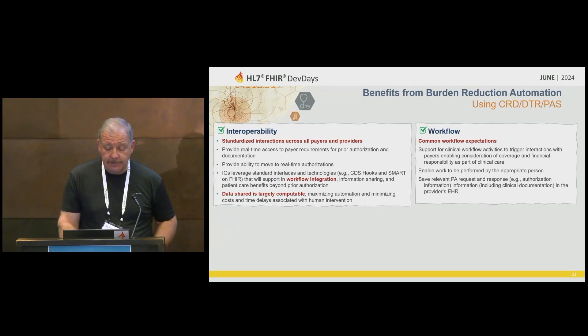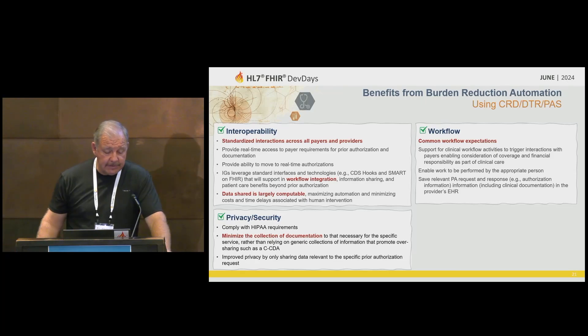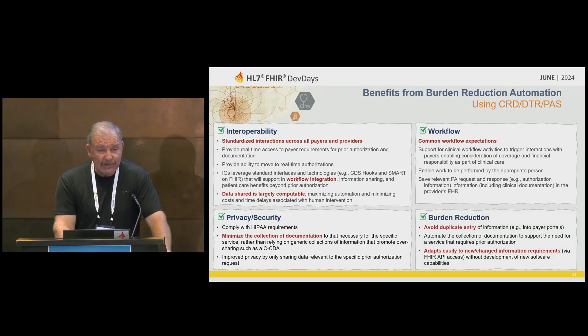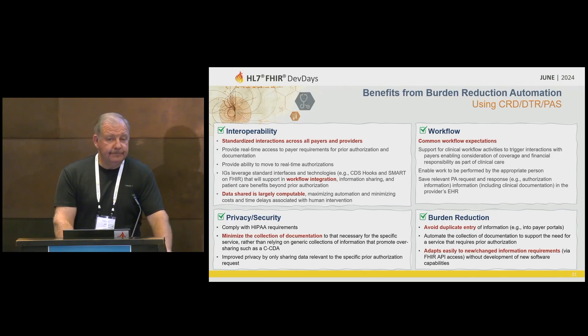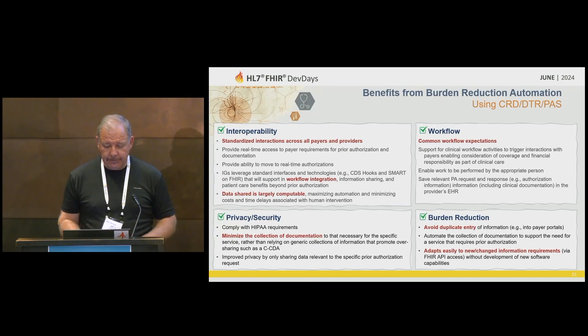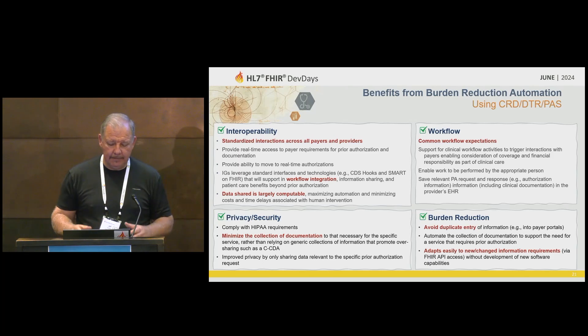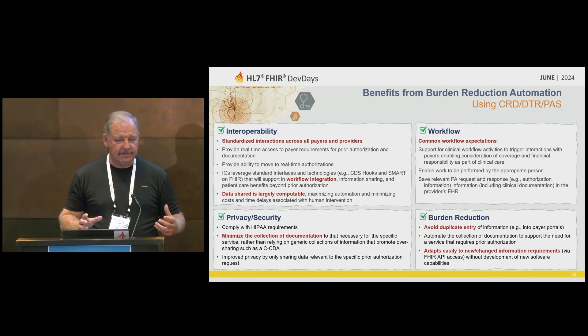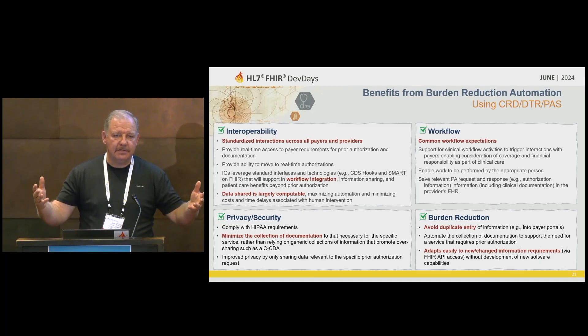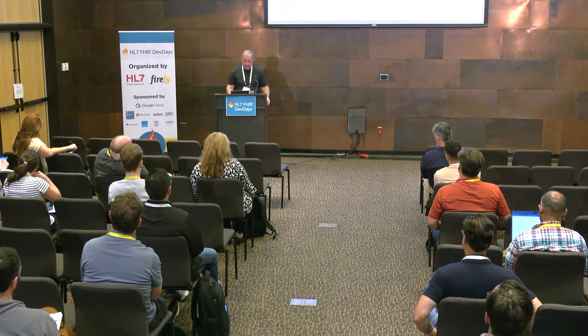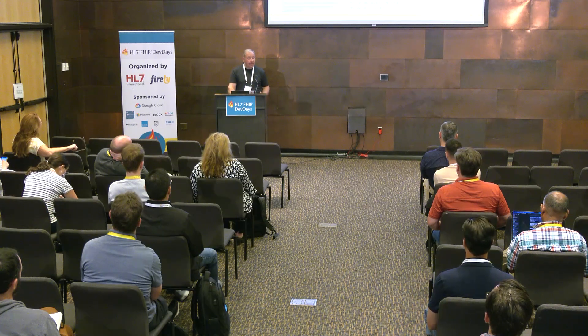The benefits from burden reduction: interoperability — that's why we're all here. We want to standardize the way these interactions take place with consistent, manageable, understandable specifications. Also the workflow — we want to automate as much of this as possible and leverage these pieces in other use cases. DTR does a great job gathering questionnaire information, pre-populating it, and presenting a form. CRD does its thing, it benefits from DTR, and then PAS does its thing. Together they make up the burden reduction solution. For prior authorization, putting them all together improves the workflow, reduces human interaction with screens, eliminates phone calls and manual chart pulls. Privacy and security always comply with HIPAA requirements. Please join our calls — your participation is what we're all about.